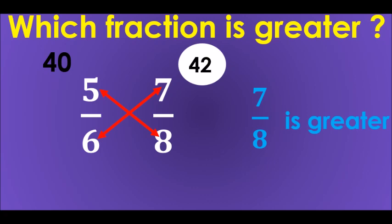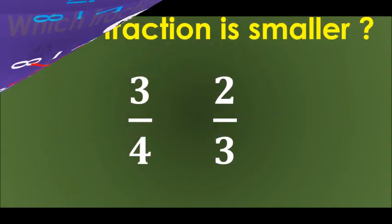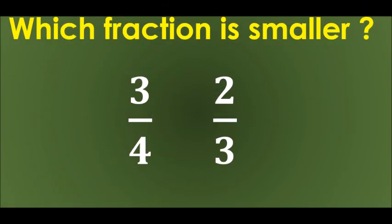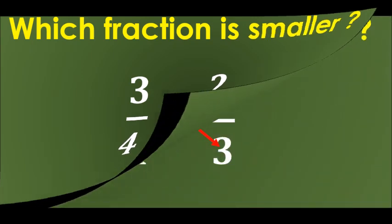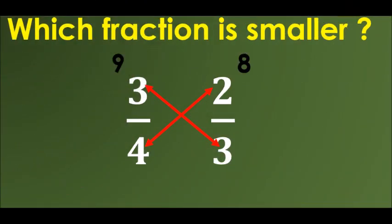Now, moving on to the smaller fraction. If in case you are asked about how to find out the smaller fraction, you have two fractions given here: 3 upon 4 and 2 upon 3. Which one do you think is smaller? Again, we are going to do just the cross multiplication.